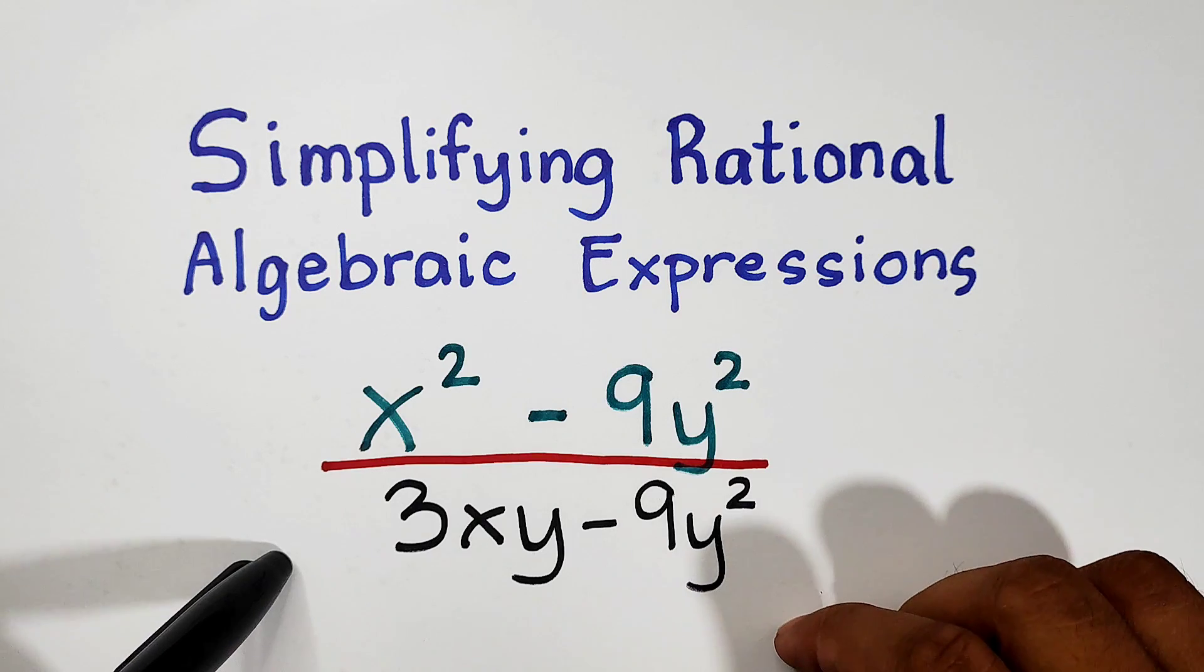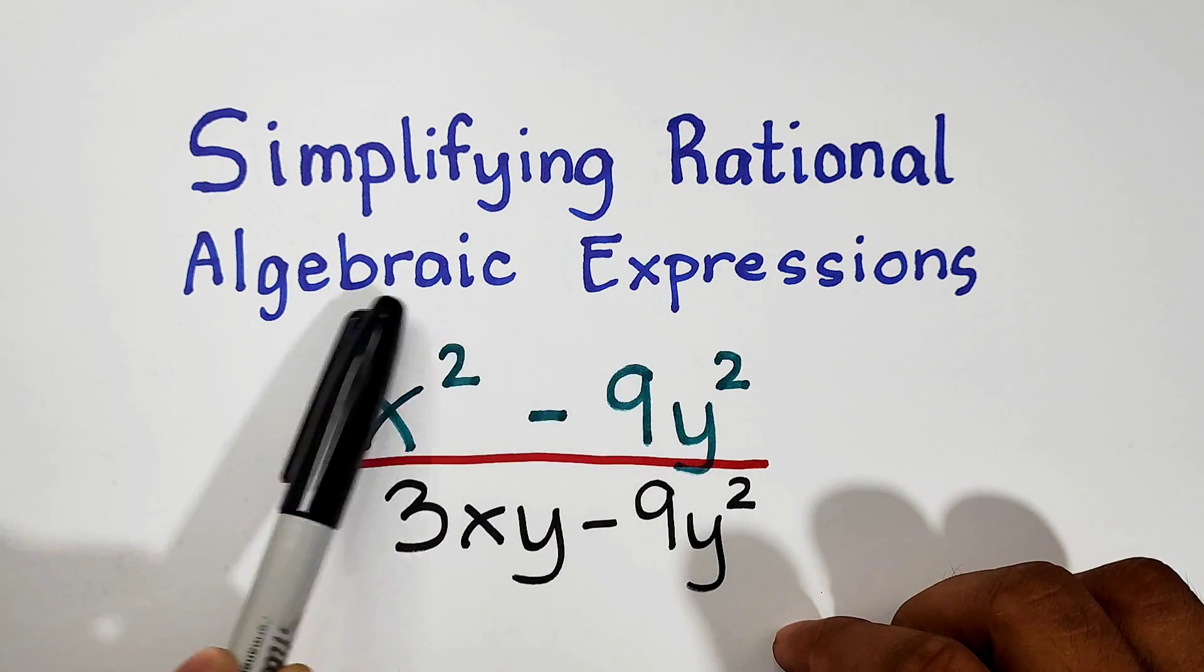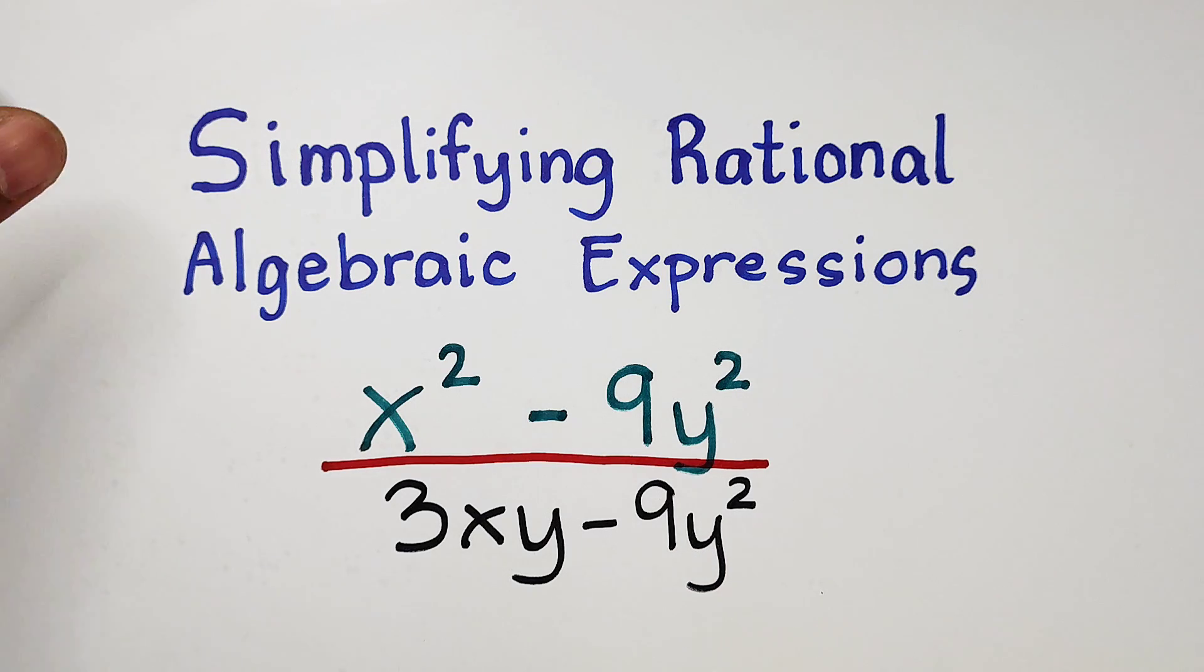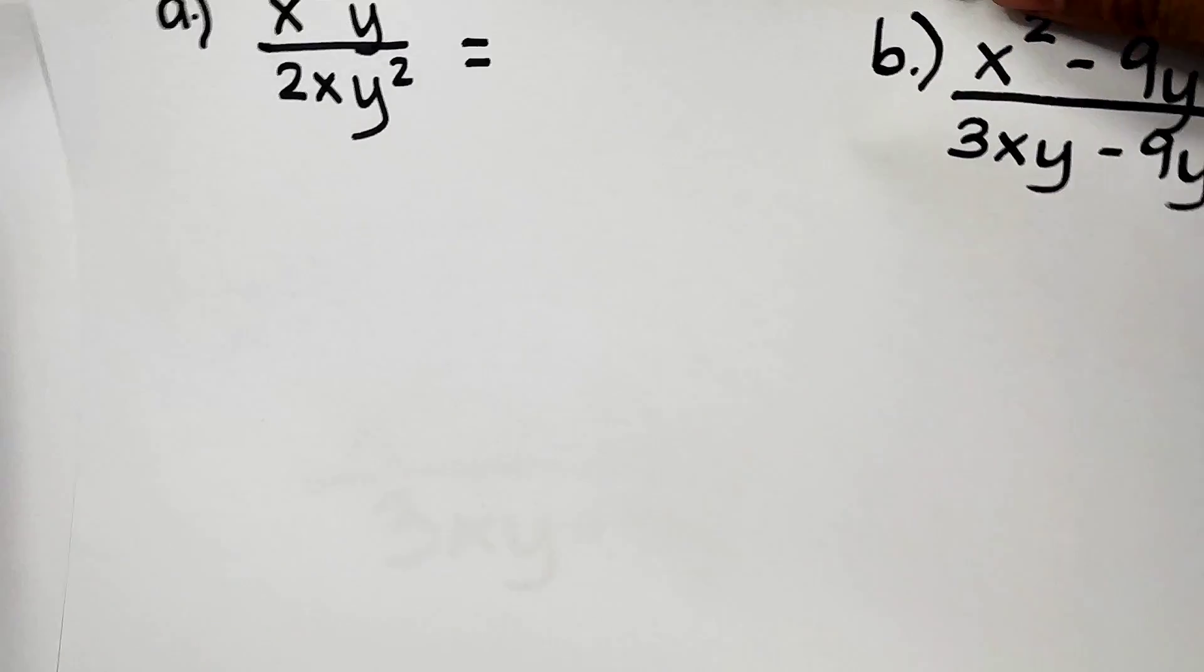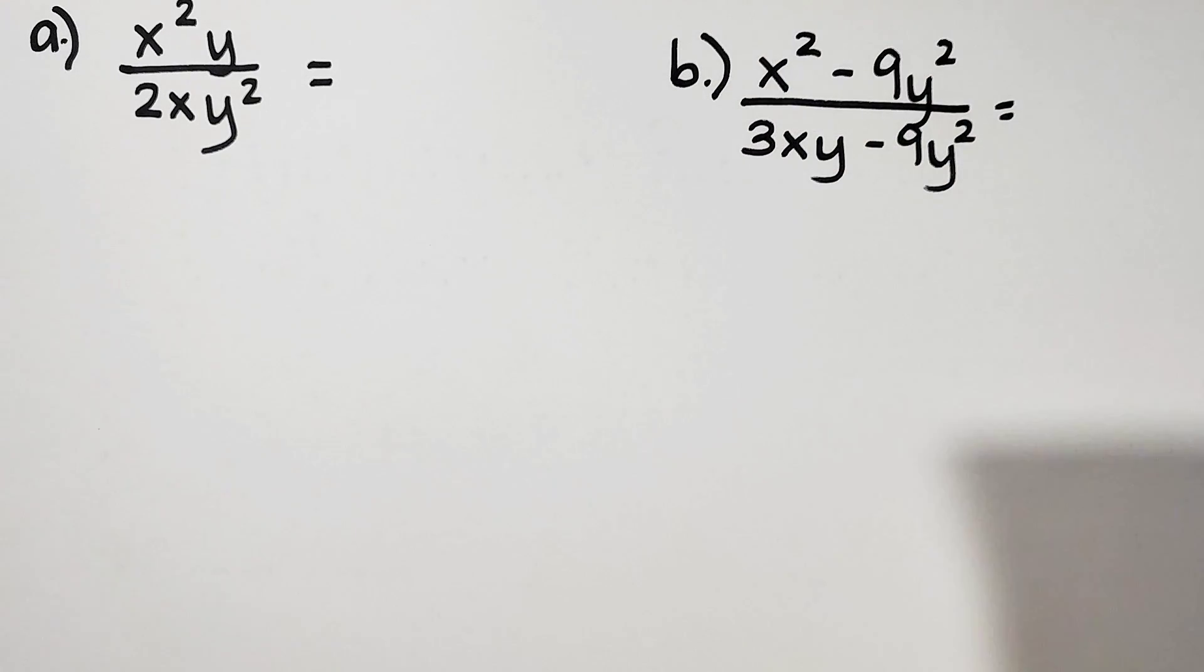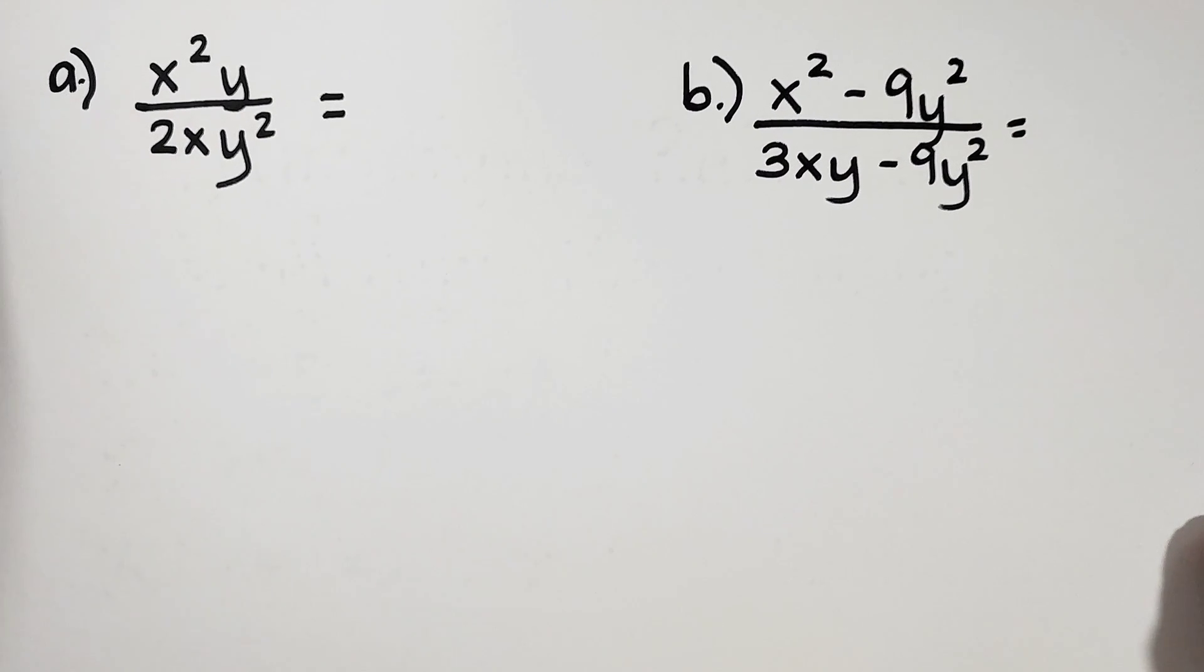So I made part 3 on how to simplify RAE or Rational Algebra Expressions. So without further ado, let's do this topic. So what we have here is the first two examples for simplifying rational algebra expressions. Let's have this one.